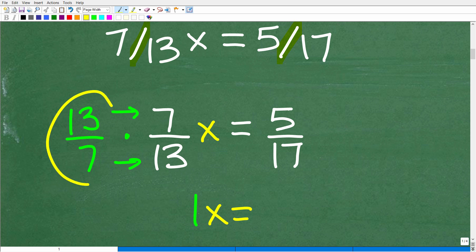But here's the deal. In algebra, whatever you do to one side of the equation, you have to do the exact same operation to the other side. So over here, we need to multiply this side of the equation by 13 over 7. So this is what we need to do in order to get the solution.